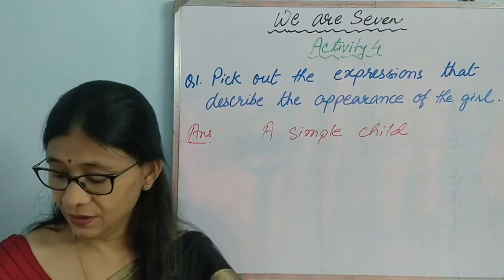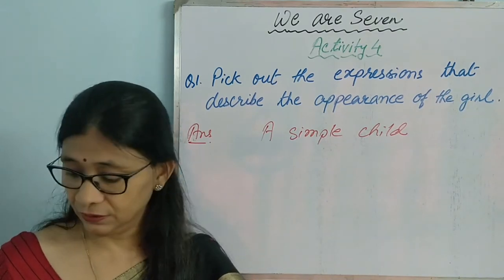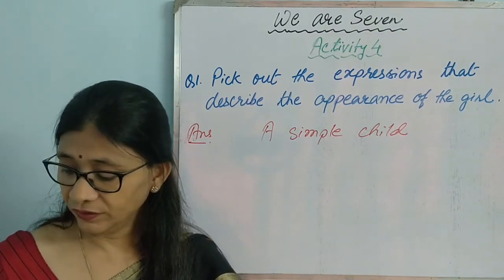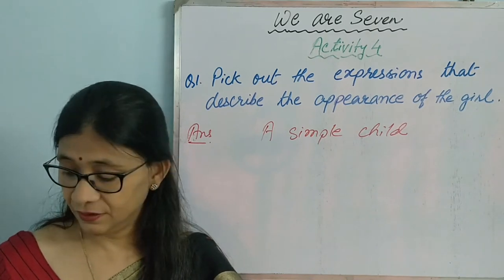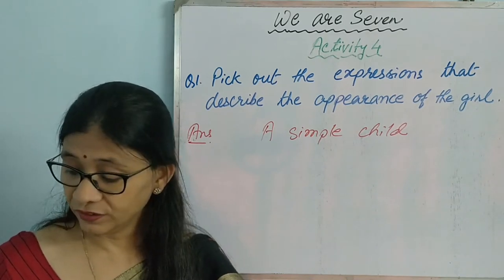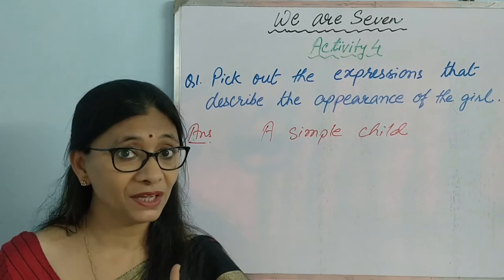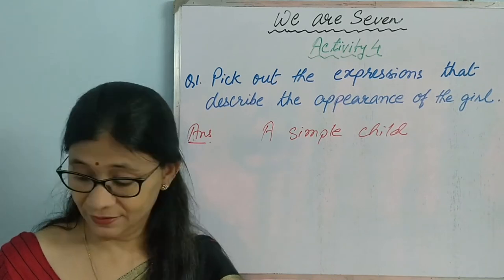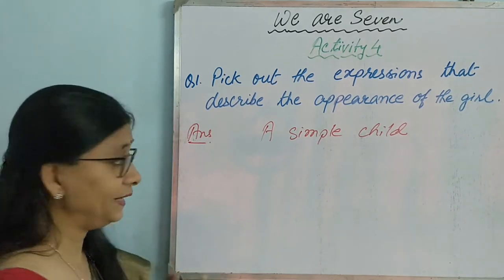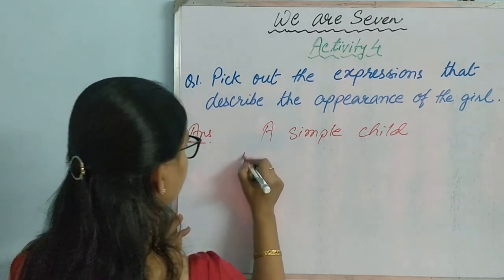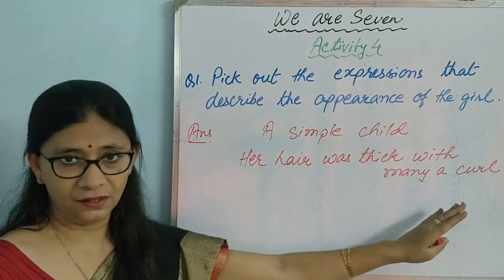The second stanza is: 'I met a little cottage girl. She was eight years old, she said. Her hair was thick with many a curl.' Now this line says something about the appearance — 'Her hair was thick with many a curl.'